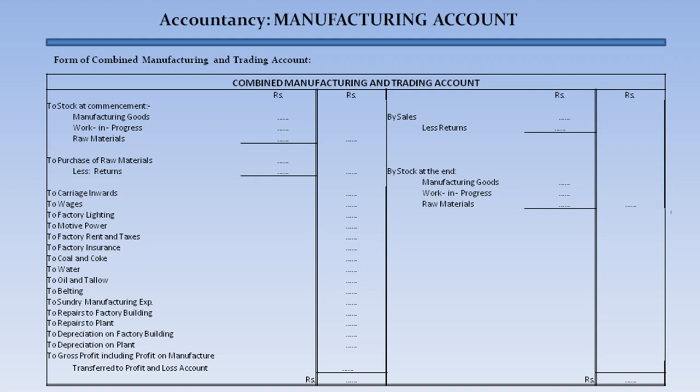On the credit side: sales less returns, stock at the end covering manufacturing goods, work in progress, and raw materials. The difference is termed as gross profit, including profit on manufacture, which is transferred to the profit and loss account. This is how we close the combined manufacturing and trading account.